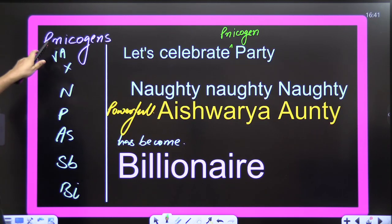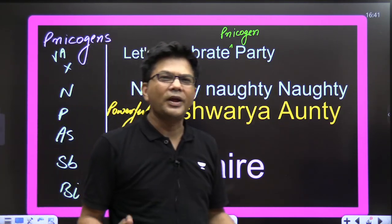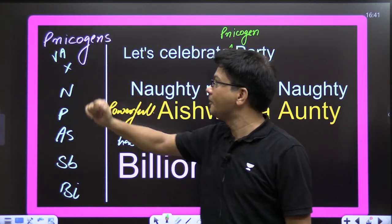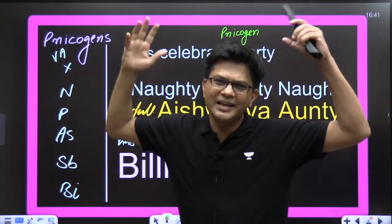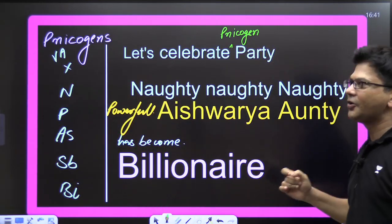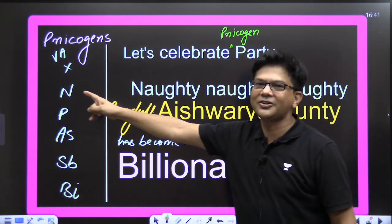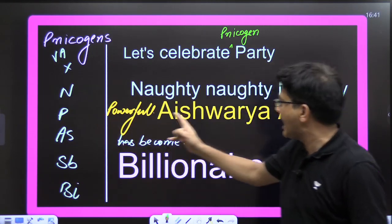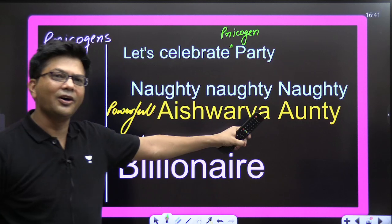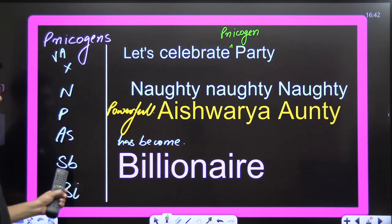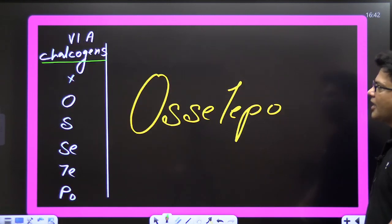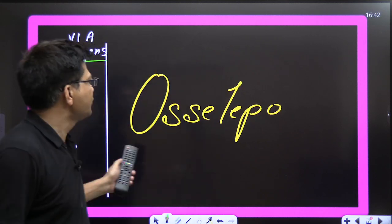Now the pnictogen family. In English, when N comes along with P, the P remains silent — so it's called the pnictogen family, peace silent! Let's celebrate pnictogen party — naughty, naughty, powerful, Aishwarya Auntie! Nitrogen, Phosphorus, Arsenic, Antimony, Bismuth — has become billionaire, has become millionaire!